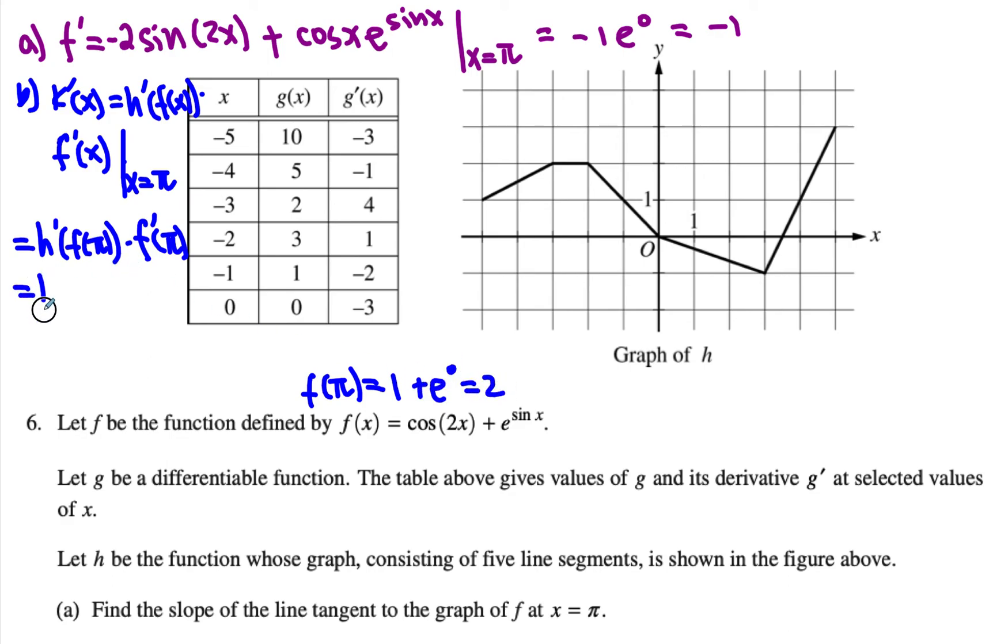On the side, f of pi, we have cosine of 2pi which is equal to one, sine of pi is equal to zero. So we get plus e to the zero power which is equal to two. So this now becomes h prime of two times negative one. But what is h prime? So two is right over here, that's the graph of h. You can see that slope is equal to negative one third. Our final answer is negative one third times negative one, which simply becomes positive one third. That would be part b.